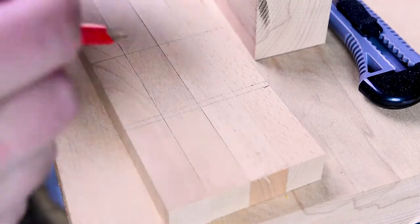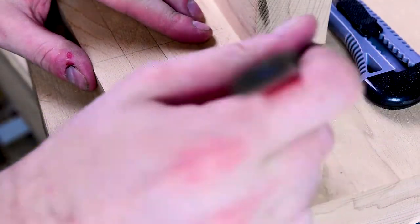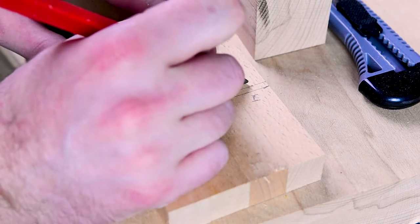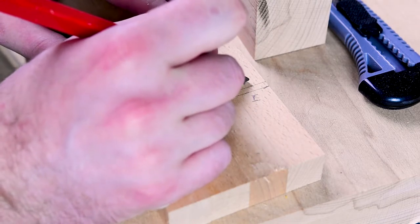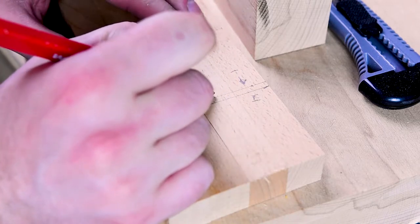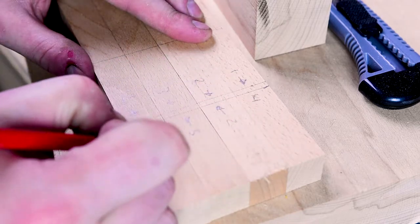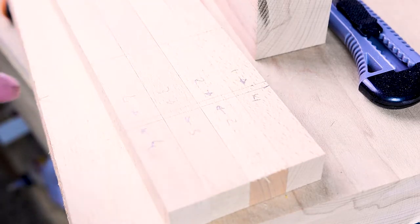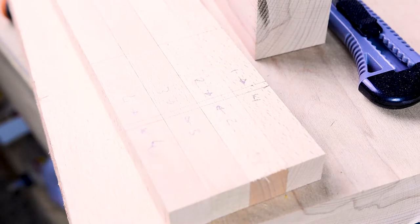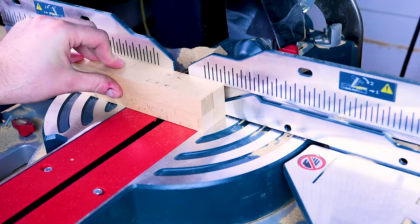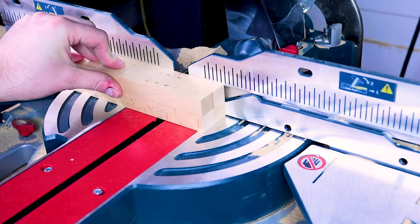Before we go cutting these I just want to put marks on them saying this is going to be one going that way and one this way we'll get the grain lining up when we assemble our pen kits on blade. You want to make sure your fingers are well and truly clear of the blade. You don't want the wood to catch and pull you into the blade. That wouldn't be much fun.